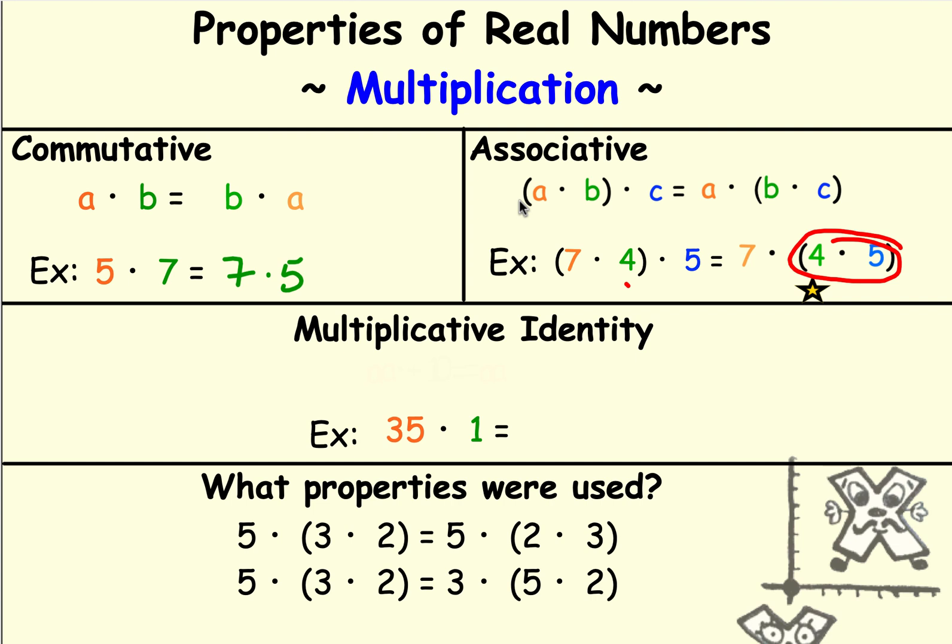So the multiplicative identity isn't 0, because if I multiplied 35 times 0, I would have gotten 0. But if I multiply 35 times 1, I end up with 35. So the multiplicative identity says that if I take any real number, multiply it by 1, I end up with exactly the number I started with.